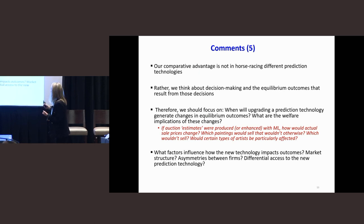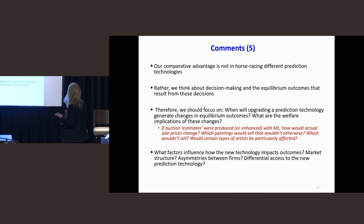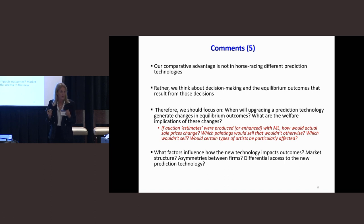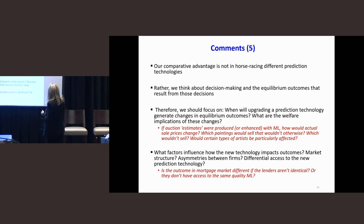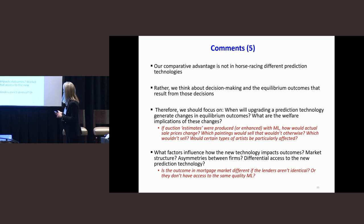Other important questions include what factors influence how the new technology impacts outcomes. For the mortgage paper, if we go all the way to the equilibrium model, we can start thinking about different assumptions — the lenders were symmetric, so what happens if lenders are not identical? What if one lender has a great AI and another has a mediocre one? And what I didn't find, which I may have missed, is what happens to the profitability of mortgages to these firms. Since you've gone almost all the way there, I'd encourage you to help us think about what market conditions would change your findings. Our comparative advantage as economists is in thinking about decision-making and the equilibrium outcomes that result — when will upgrading a prediction technology generate changes in equilibrium outcomes, and what are the welfare implications of these changes? Thank you.